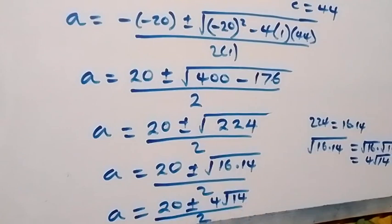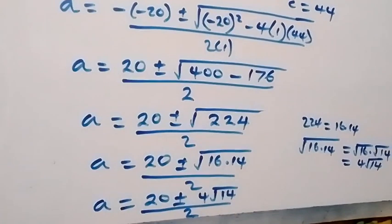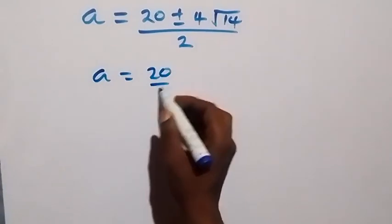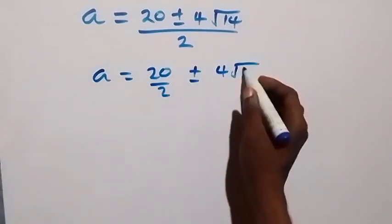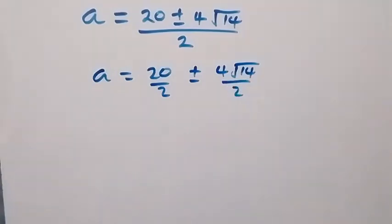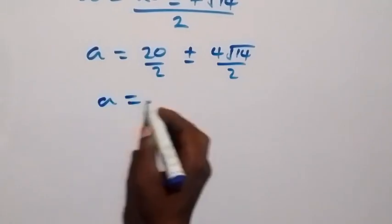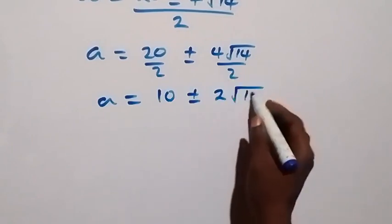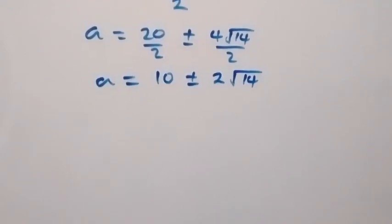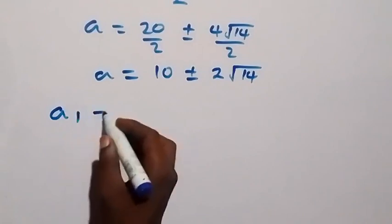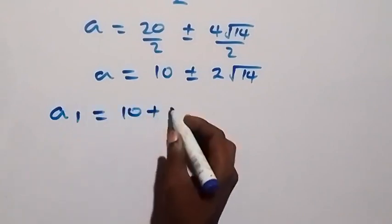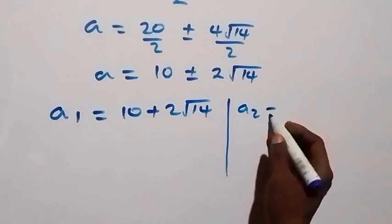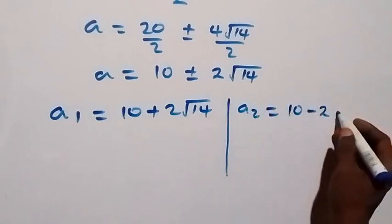Then 4 over 2 from here. This can be written as A equals to 20 plus or minus 4 root of 14 over 2, which simplifies to A equals to 10 plus or minus 2 root of 14. So we have two values for A: A1 equals to 10 plus 2 root of 14, and A2 equals to 10 minus 2 root of 14.